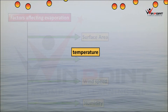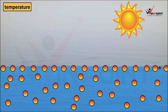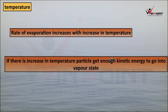Now we can discuss about temperature and its effect on evaporation. Evaporation is a surface phenomenon. When there is more temperature — imagine it is summer season, a sunny day, and the temperature is above 40 degrees Celsius — the particles present at the surface of water are going to get more kinetic energy. Because of that, the rate of evaporation will be more, and the water will vaporize fast. We can conclude that the rate of evaporation will increase with increase in temperature. If there is an increase in temperature, particles get enough kinetic energy to go into vapor state.